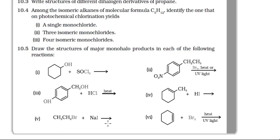Question 5 involves the Finkelstein reaction — it is a halogen exchange reaction. The bromide is exchanged by iodine and we would get iodoethane as the main product.